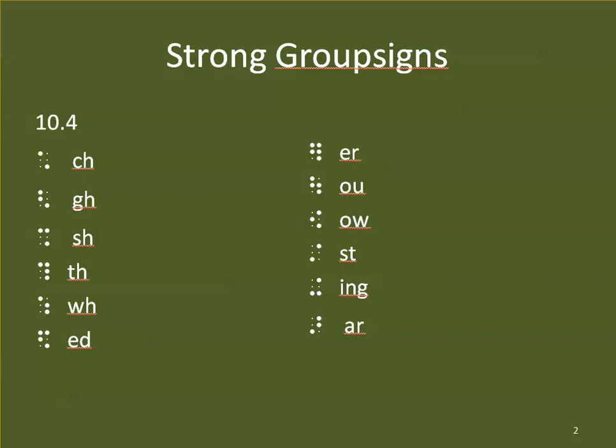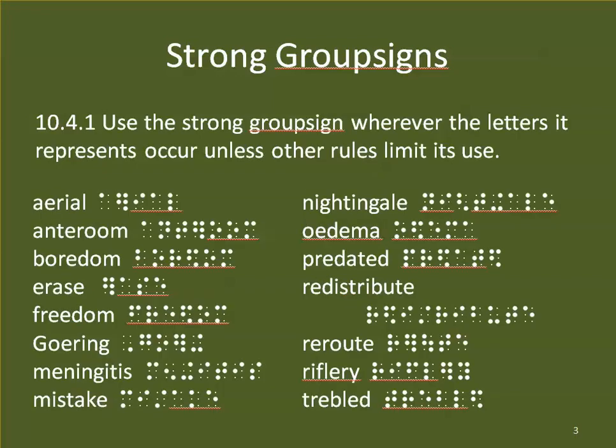Additional strong group signs include ED and ER, OU, OW, ST, ING, and AR — quite a bunch of them. We use the strong group signs wherever the letters they represent occur unless the rules limit their use. So we have to be aware of the rules to know whether we can or can't use the contractions, which is why I go into the rules a little bit today.